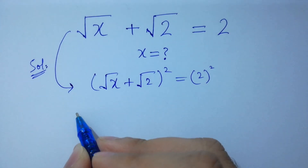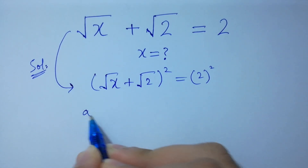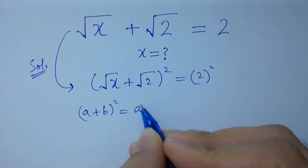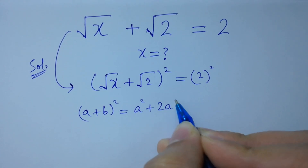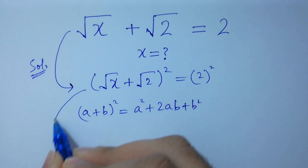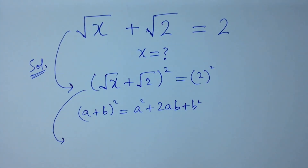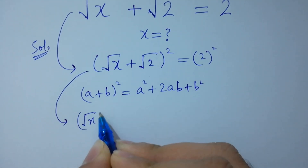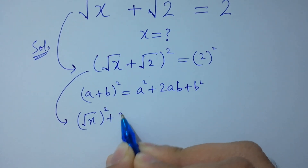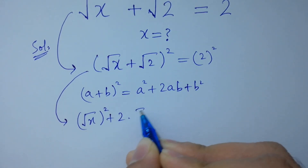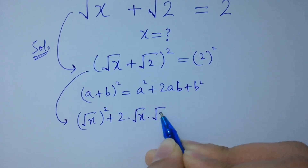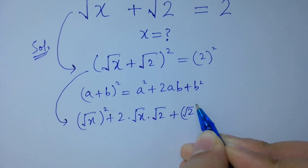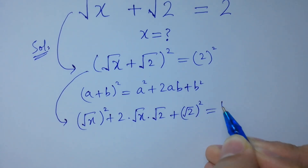As we know, the formula: a plus b whole square equals a squared plus 2ab plus b squared. It will be square root of x squared plus 2 times square root of x times square root of 2 plus square root of 2 squared, equal to 2 times 2, which is 4.